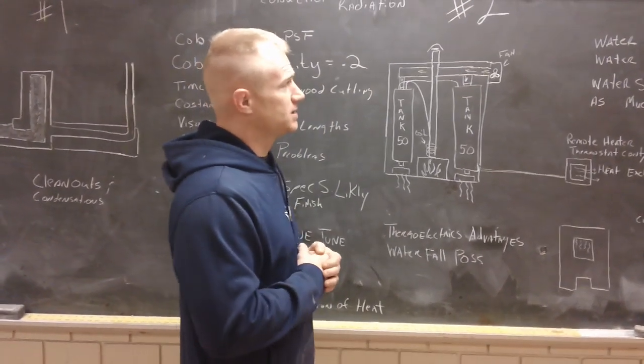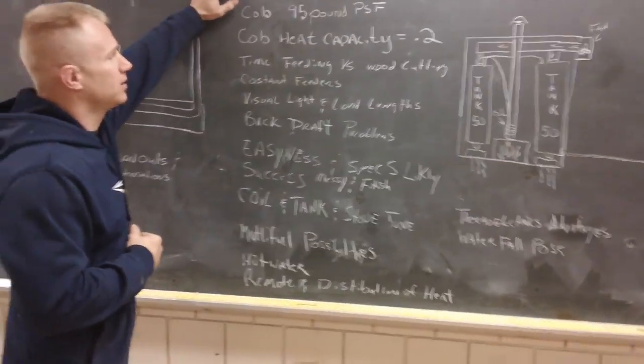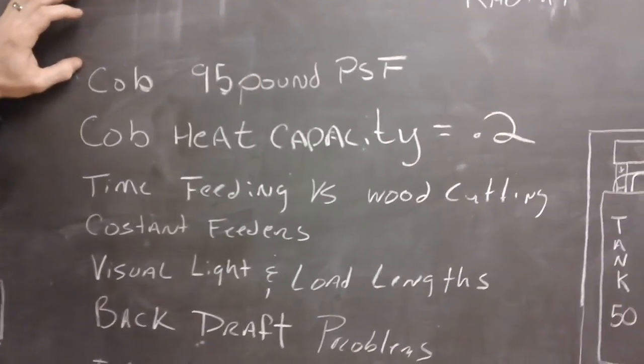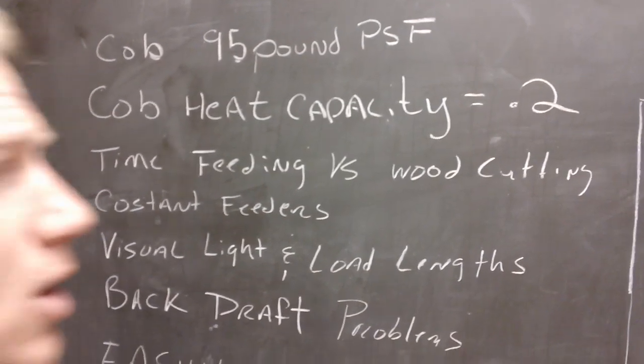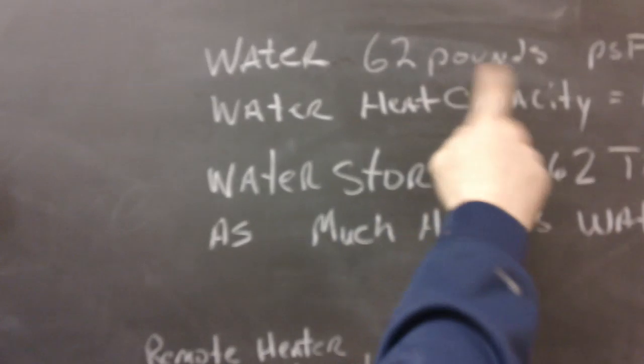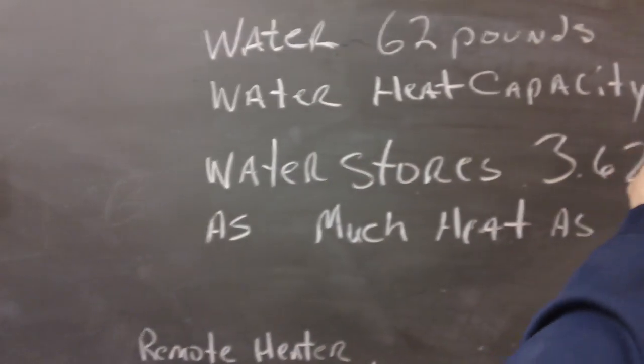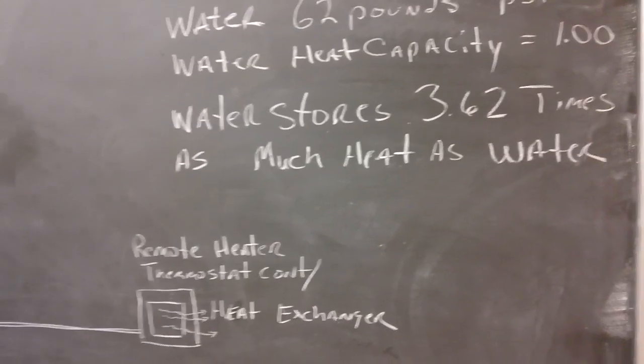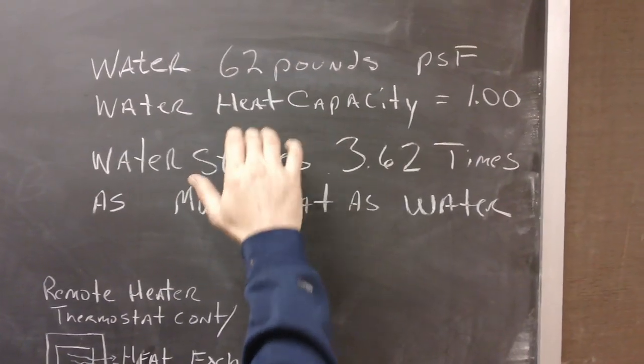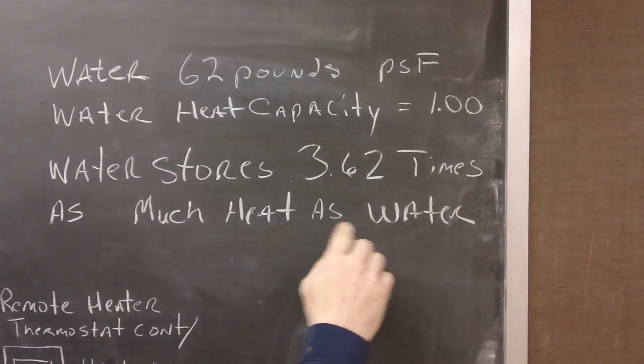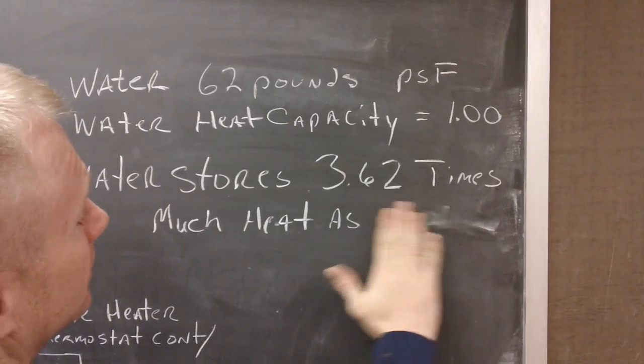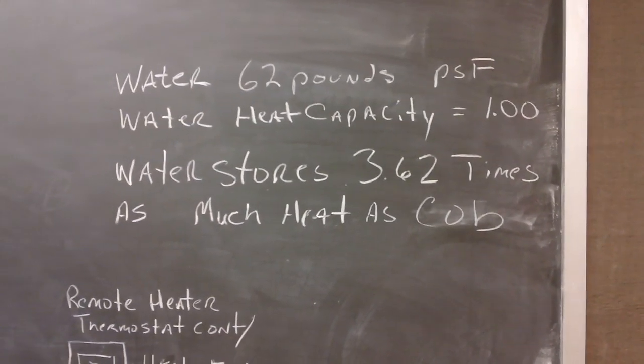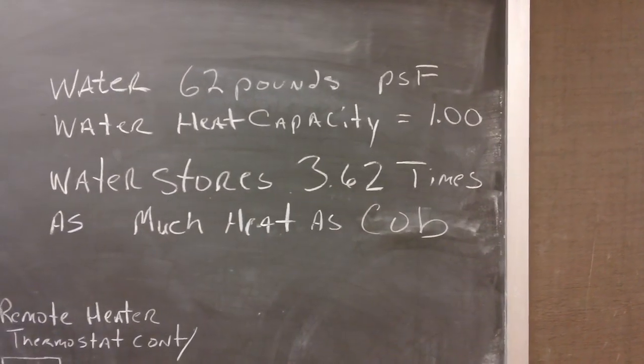First thing I want to say is that cob here is 95 pounds per square foot. Cob's 95 pounds per square foot and has a cob heating capacity of 0.2. On the other hand, water here is 62 pounds per square foot, but it has a heating capacity of 1.0. So it's five times. Bottom line is because of the weight differential, but the increased heating capacity, water stores 3.62 times as much heat as cob.